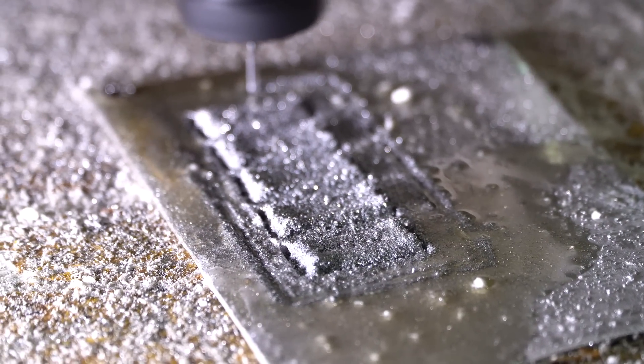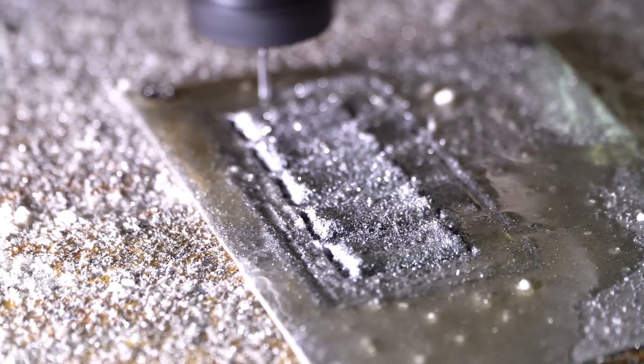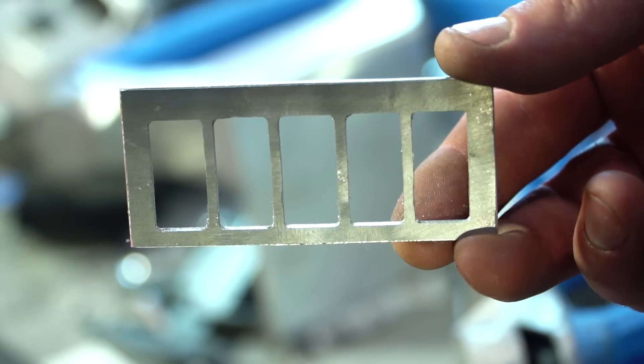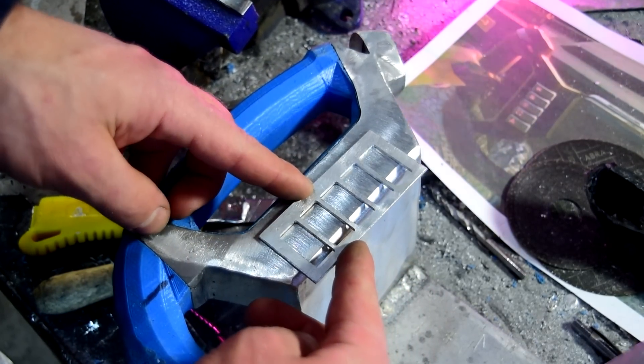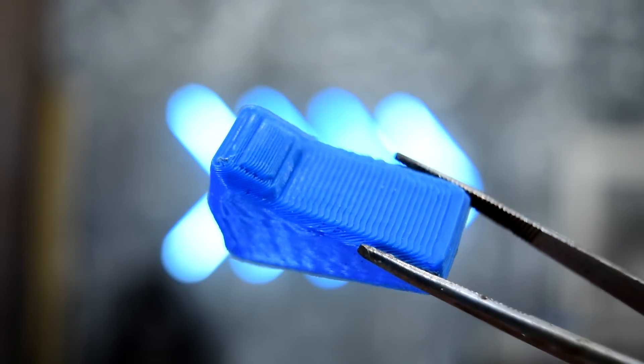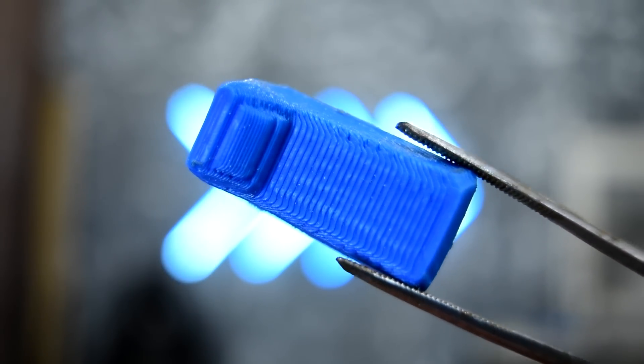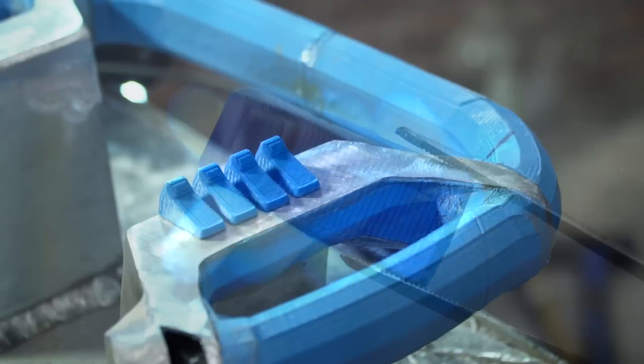I cut the frame for the buttons on the CNC machine. The buttons themselves were printed out of plastic. I've done it rudely so far, as I'll possibly change their shape a bit in the future.